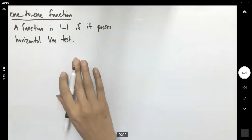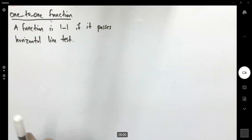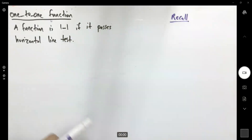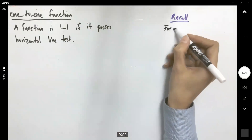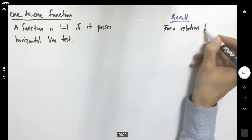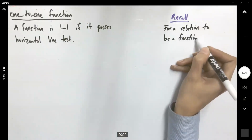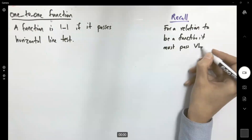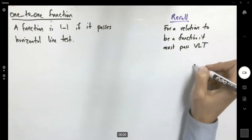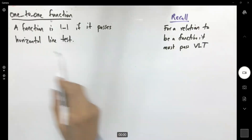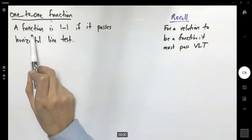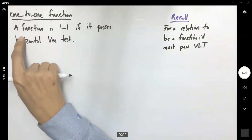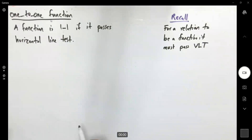Do not confuse this with the definition of a function. Recall that for a relation to be a function, it must pass the vertical line test. Now we are moving to a new terminology — one-to-one function. A function is one-to-one if it passes the horizontal line test, meaning any horizontal line has at most one intersection with the graph.